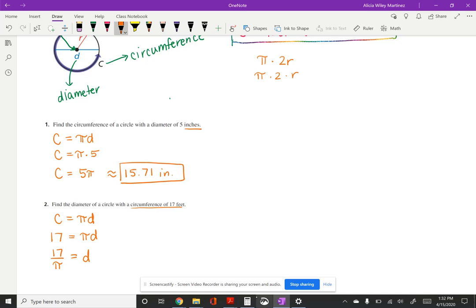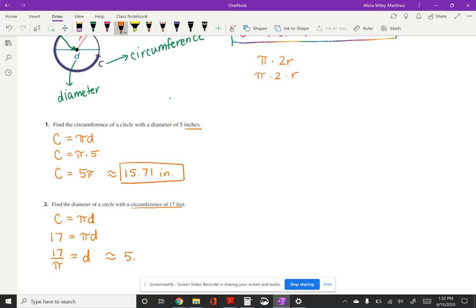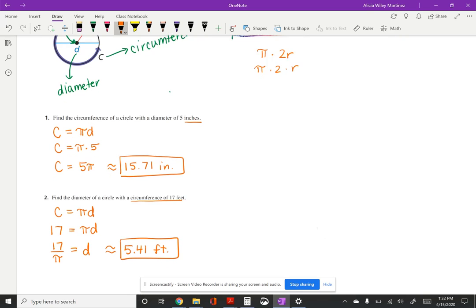So that means that the answer is approximately so I'm going to go to my calculator and I'm going to do 17 divided by π. And I get 5.411. So to two decimal places that's 5.41 and it's in feet for my unit of measure. So there is my answer.